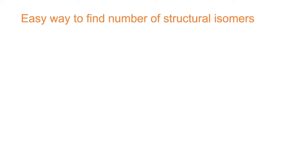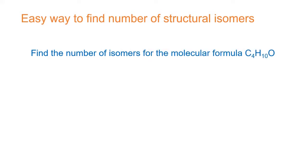Hello students, welcome to Muggy's Classes. In this video we are going to discuss an easy way to find the number of structural isomers. This presentation is very useful to Plus 2 chemistry and NEET/IIT JEE aspirants. In examination we come across problems like finding the number of isomers for the molecular formula C₄H₁₀O, which represents alcohols and ethers. This video helps you find the number of isomers for various molecular formulas like acids, aldehydes, ketones, esters, ethers, etc. Keep watching till the end.